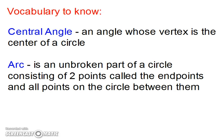Let's look at some vocabulary. A central angle is an angle whose vertex is the center of a circle. An arc is an unbroken part of a circle consisting of two points called the endpoints and all points on the circle between them.